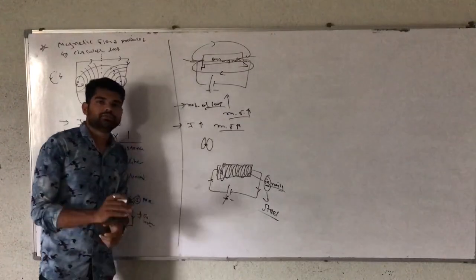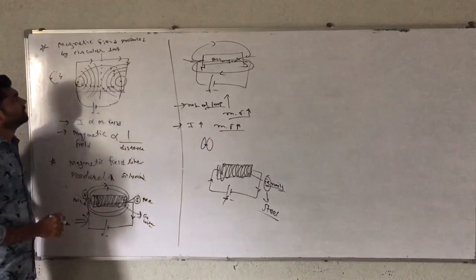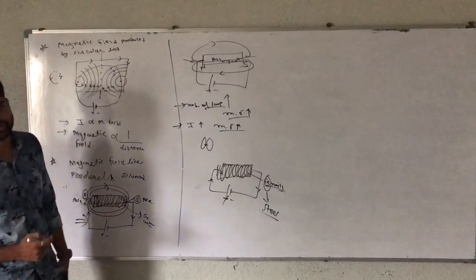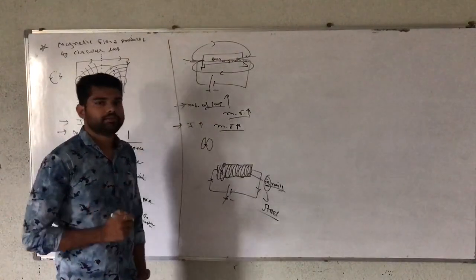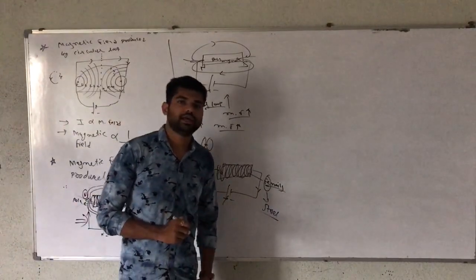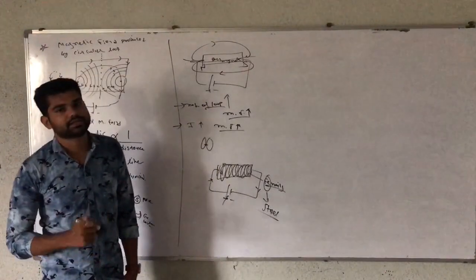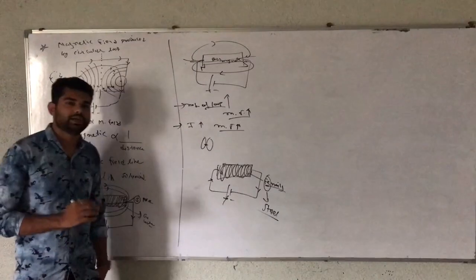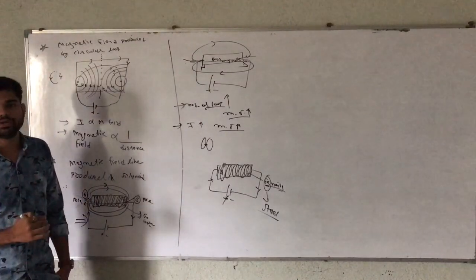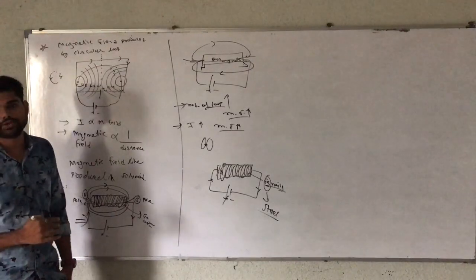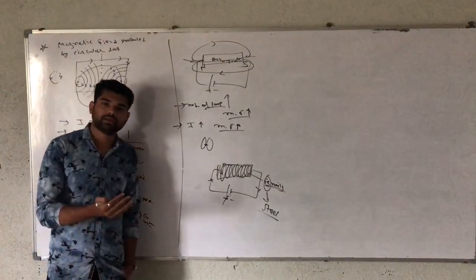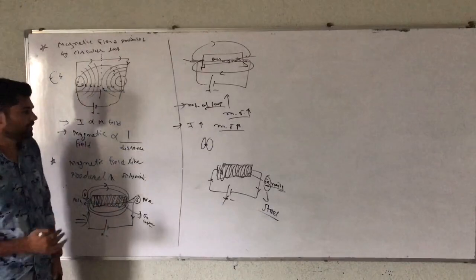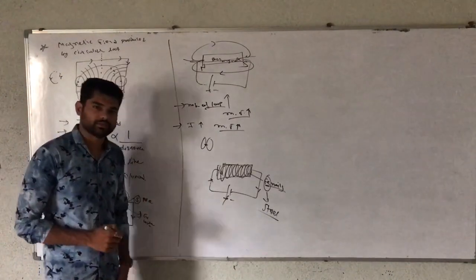So in this lesson, we studied magnetic field lines produced in a circular loop. Second, magnetic field lines produced in a solenoid loop. In the previous lecture, we studied two topics: magnetic field lines produced in a straight line conducting wire, and the right hand thumb rule. So four topics are covered. First: magnetic field produced in a straight conducting wire. Second: magnetic field produced in a circular loop. Third and fourth: magnetic field lines in a solenoid. Thank you, friends.